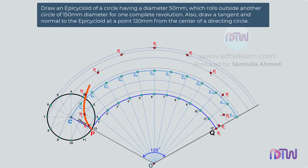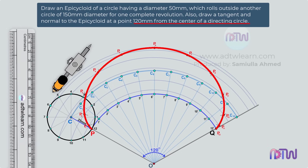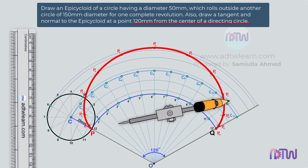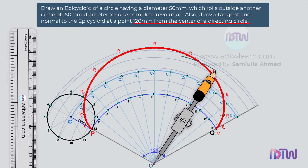Draw a smooth arc passing through all these points. This is the final required epicycloid. Next, we need to draw a tangent and a normal to the epicycloid at a point 120 millimeters from the center of the directing circle — that is, the center of the larger circle. Take a compass, take 120 millimeters or 12 centimeters, use point O as center, and cut an arc on the epicycloid. Mark this intersection point as M.